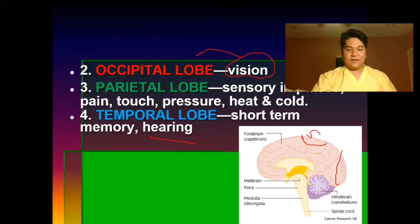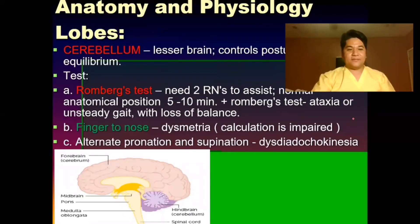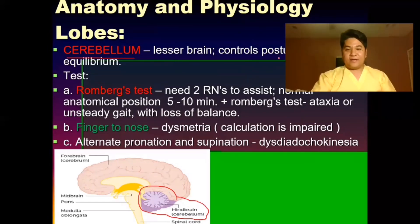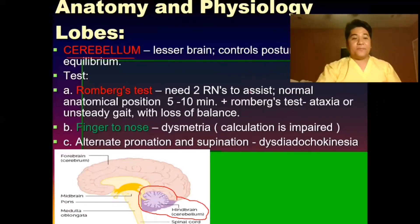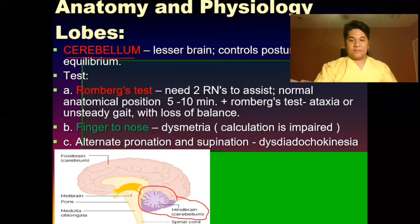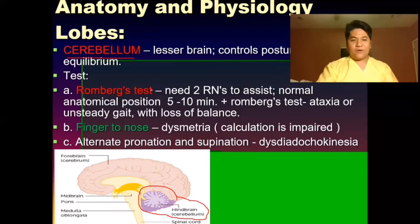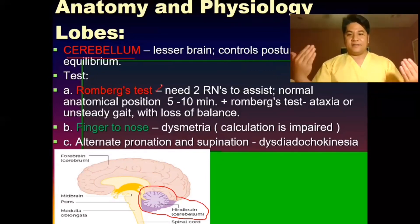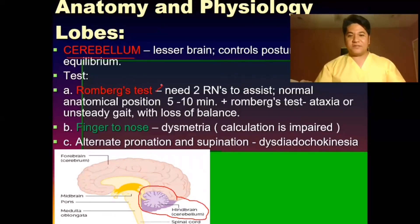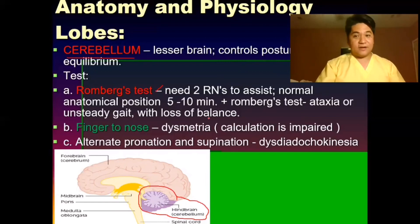The cerebellum, also called the hindbrain or lesser brain, controls posture, gait, balance, and equilibrium. Problems with the cerebellum cause gait disturbances, inability to maintain posture, and inability to measure distances. The Romberg's test assesses this: have the client stand in anatomical position — if there is swaying for 5 to 10 minutes, it is positive for Romberg's test, indicating ataxia or unsteady gait, and affectation of the cerebellum.